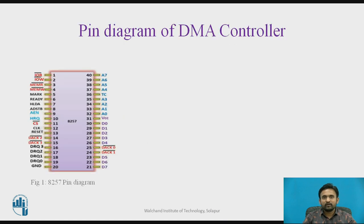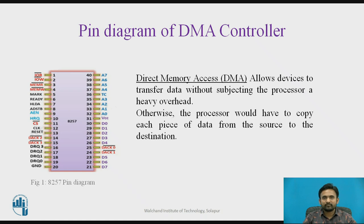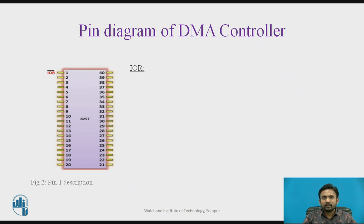The DMA controller is a 40 pin IC package. It allows devices to transfer data without subjecting the processor to heavy overhead. Otherwise, the processor would have to copy each piece of data from the source to the destination. With the use of this particular IC, we can transfer heavy overloaded data from source to destination — that is the main function behind using this particular IC package. Now, one by one, we will check the function of each particular pin in this IC.